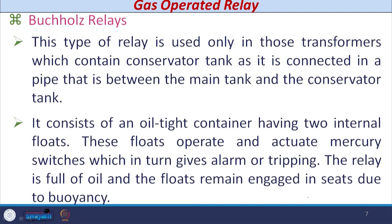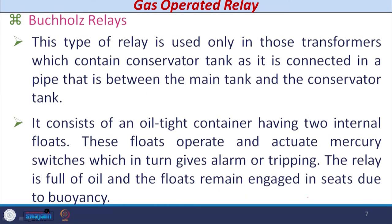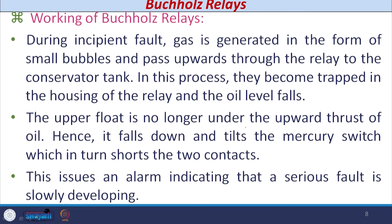The Buchholz relay is normally connected in the pipe between the conservator tank and the main tank of the transformer. This type of device is utilized particularly in our country, whereas sudden pressure relays are used in some other countries. The Buchholz relay consists of an oil-tight container in which two floats are provided. These two floats operate and actuate mercury switches located below each float. One is the upper float and the other is the lower float. The relay is full of oil and the floats remain engaged in their seat due to the buoyancy effect.